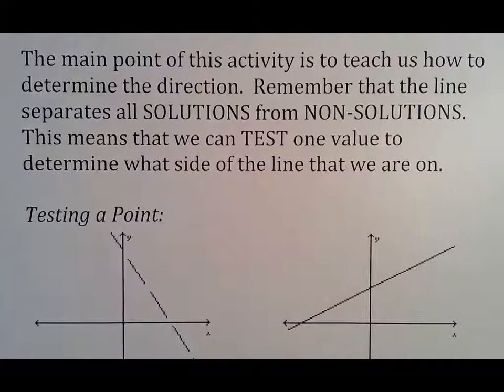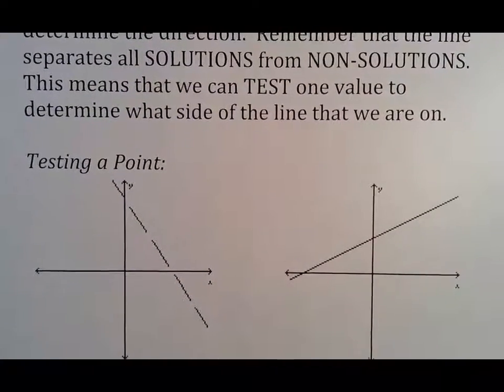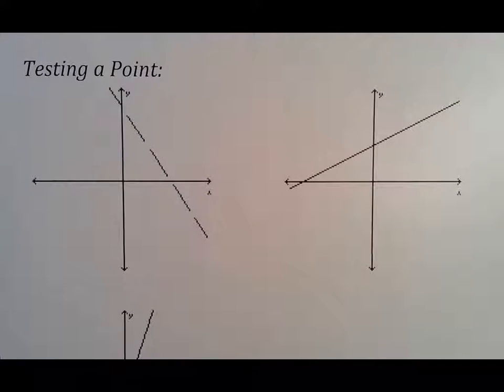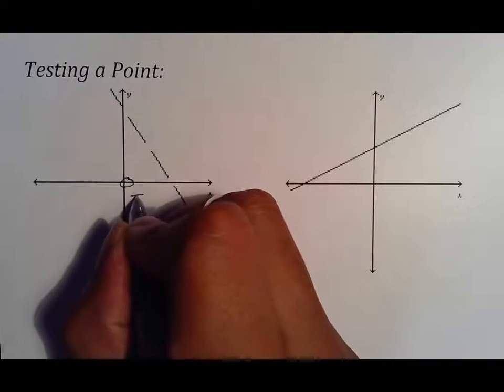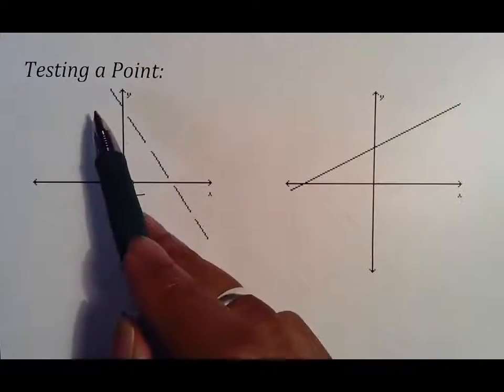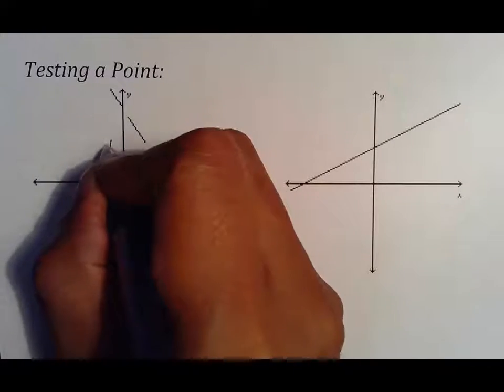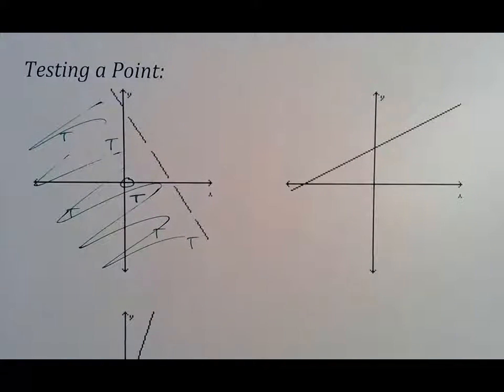The main part of this activity is to teach us how to determine the direction. Remember that the line separates all solutions from non-solutions. This means that we can test one value. You can test any value you want in terms of testing a point. Typically, the best point to test is 0, 0. For those of you who did the x-intercept, y-intercept by ignoring the x and the y, you understand the ease of 0, 0. What happens when you plug in 0, 0 is your x turns into 0, your y turns into 0, and you can get your answer. If 0, 0 was true, let's say you test 0, 0 and you get a true statement. Remember that this separates everything true from everything that's not true, which means that if this is true on the left, that means that everything on the left should also be true. Therefore, you would shade towards that true statement.